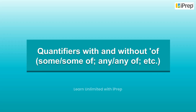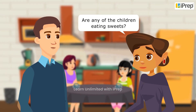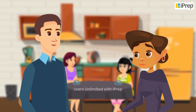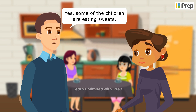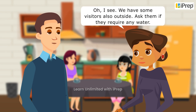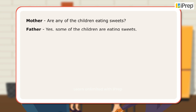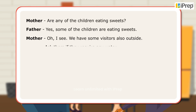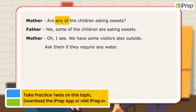Quantifiers with and without 'of': some, some of, any, any of, etc. Are any of the children eating sweets? Yes, some of the children are eating sweets. We have some visitors outside — ask them if they require any water. In the conversation, the mother and father have spoken about countable and uncountable things using quantifiers with and without 'of'.